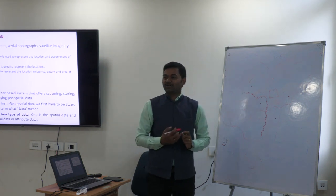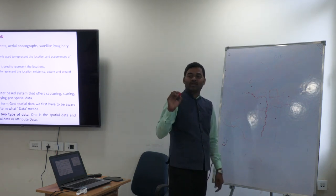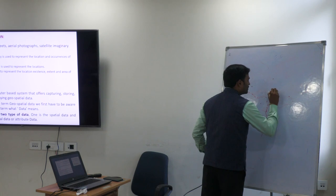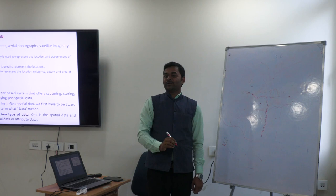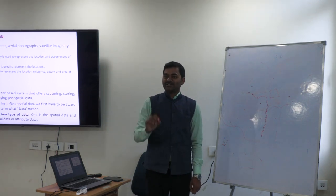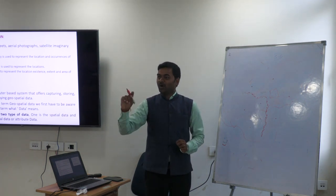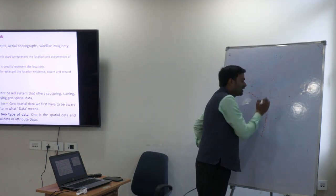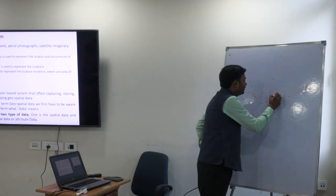In the same university, if I want to show the different blocks — Block A, Block B, Block C — I use a point to demarcate them on the map. In the same university, if I want to know the path from A to B, B to C, C to D, then I use a line. For example, the road from Block A to Block B — I'll draw a line for that road.